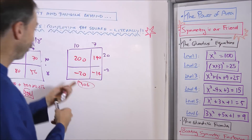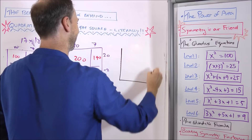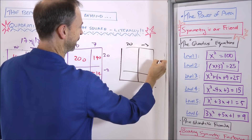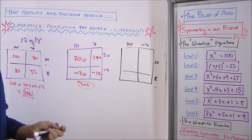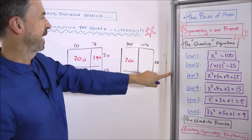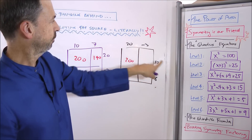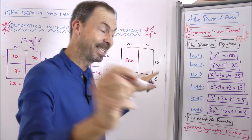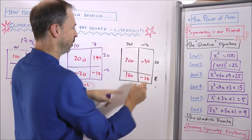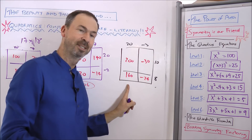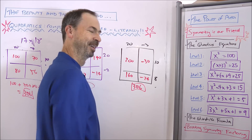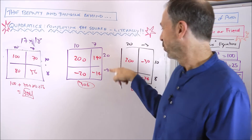Now let me get strange with the number 17 instead: use 20 and negative 3, and keep 18 as 10 and 8. We get 20×10=200, negative 3×10=negative 30, 20×8=160, negative 3×8=negative 24. Adding: 200+160−30−24 = 360−54 = 306. Even when the geometry gets a bit strange, it is still speaking arithmetic truth.